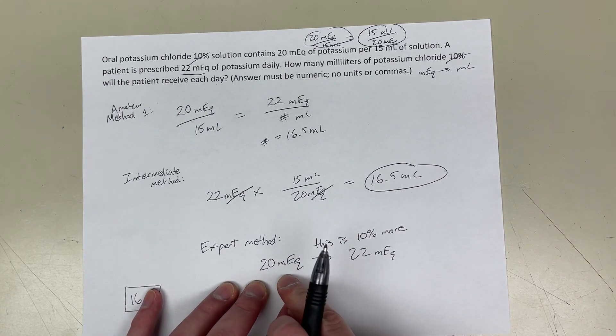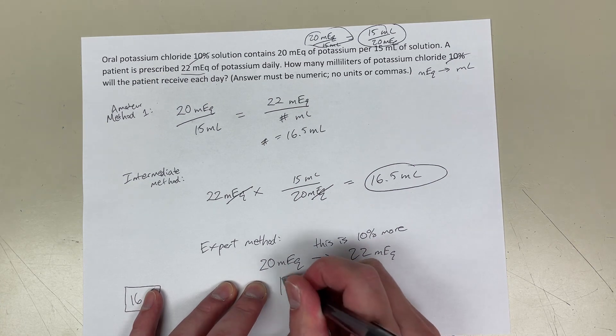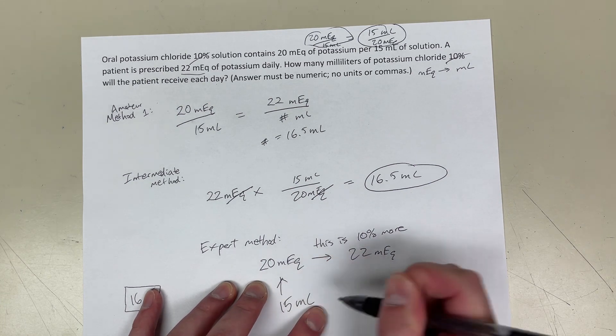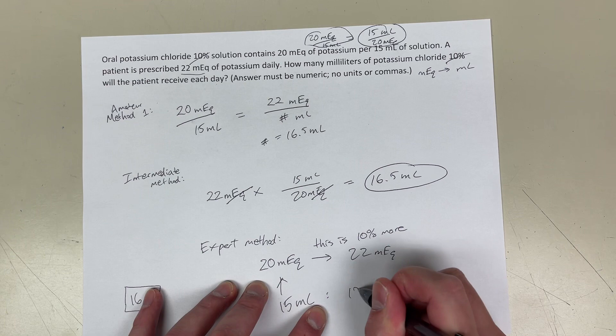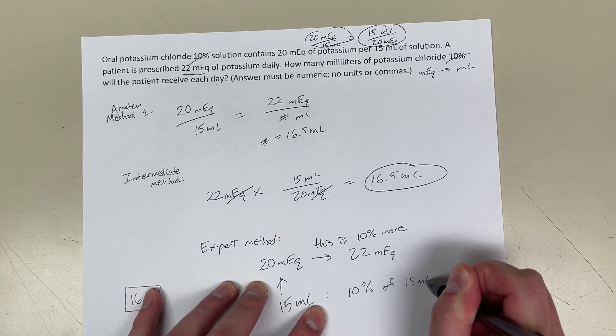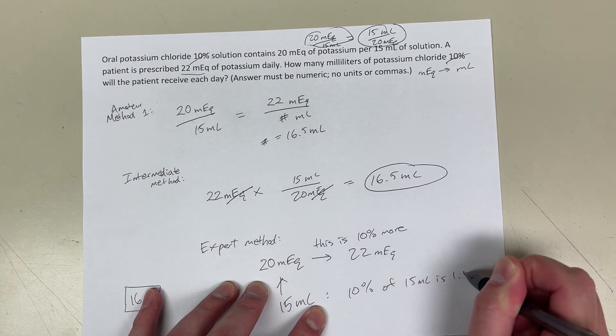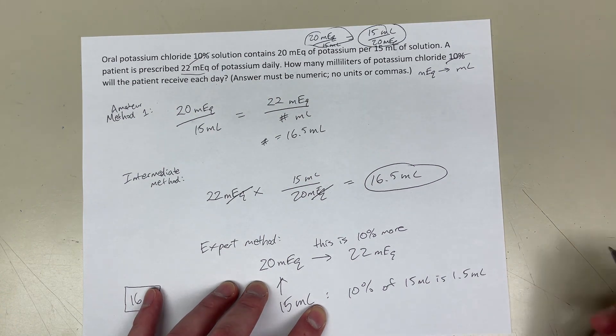And then, in every 20 milliequivalents, there's 15 milliliters. So, and 10% of 15 milliliters is 1.5 milliliters.